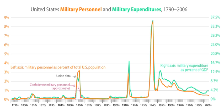General George Washington proved an excellent organizer and administrator, who worked successfully with Congress and the state governors, selecting and mentoring his senior officers, supporting and training his troops, and maintaining an idealistic Republican army. His biggest challenge was logistics, since neither Congress nor the states had the funding to provide adequately for the equipment, munitions, clothing, paychecks, or even the food supply of the soldiers. As a battlefield tactician Washington was often outmaneuvered by his British counterparts.